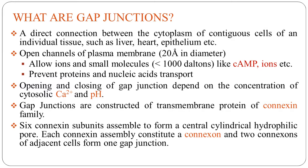Interestingly, opening and closing of these gap junctions are sensitive to certain factors in the cytosol, which are mainly calcium ions and pH inside the cell. Gap junctions remain closed at high cytosolic concentration of calcium ions and low pH, while the opposite is the condition for opening. That means, at high pH and low calcium ion concentration, gap junctions open up. These are the two major factors that regulate functioning of this particular cell-to-cell junction in individual tissue.